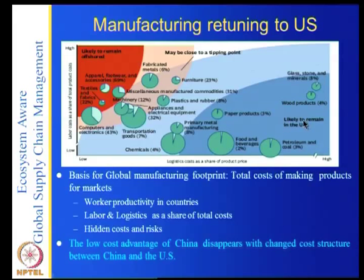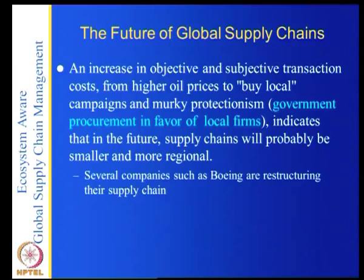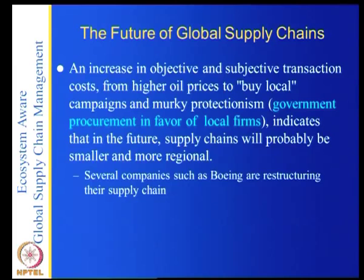The future of global supply chains: an increase in objective and subjective transaction costs, from higher oil prices to buy-local campaigns and murky protectionism, indicates that supply chains will probably become smaller and more regional. Several companies such as Boeing are restructuring their supply chains. Frequent supply chain redesign is necessary — it is not as though you can design your supply chain and sit back and relax for years.